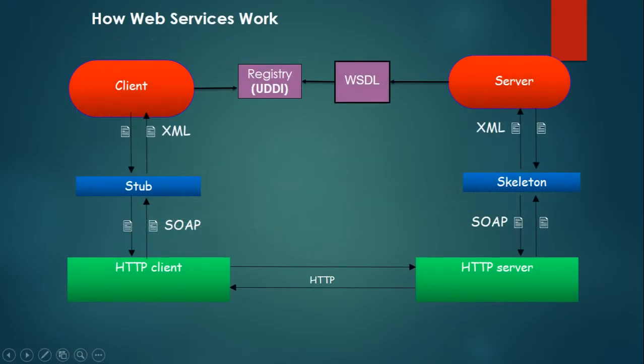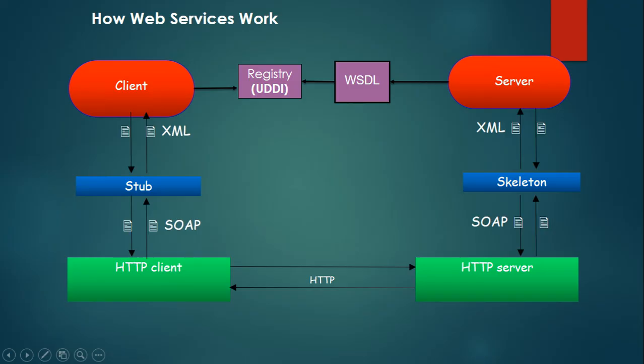Now let's overview the working of a web service. Suppose we have a server on which a web service is running, and a client system running a standalone application. When the client application wants to invoke some service from the server, it first needs to know what type of service the server is providing. For this, the server generates a WSDL document describing the various uses and format of the web service.